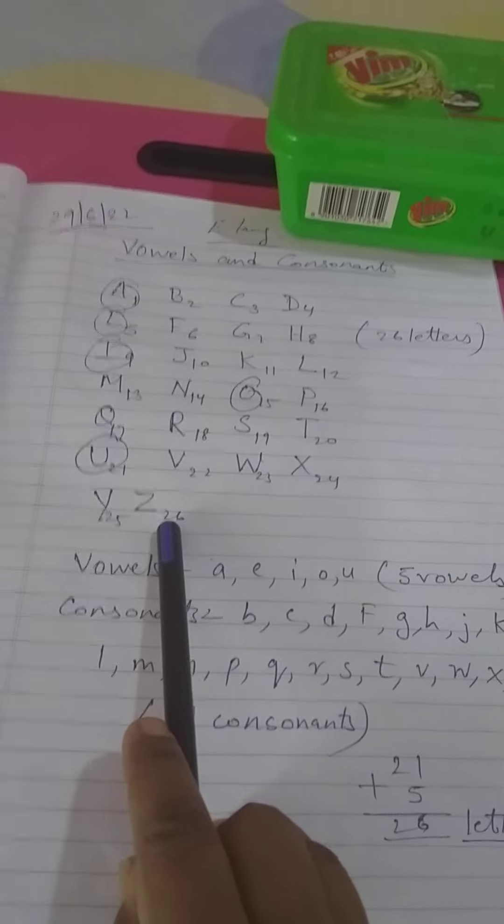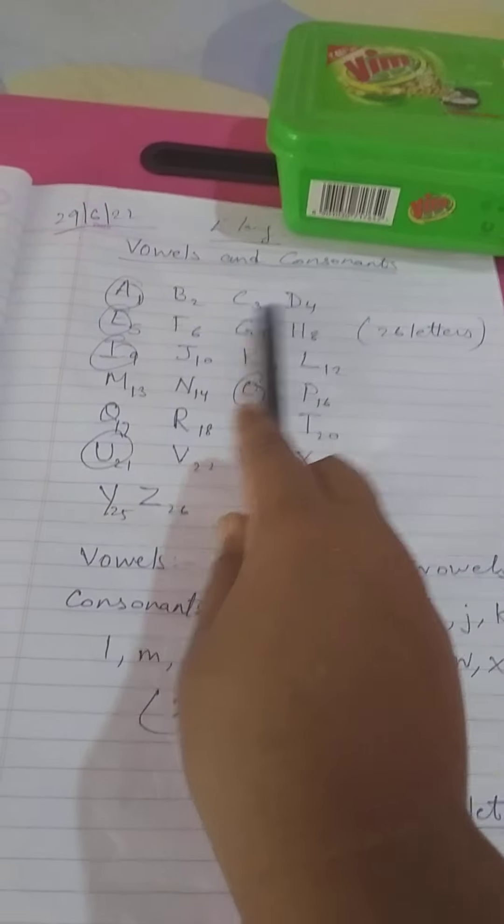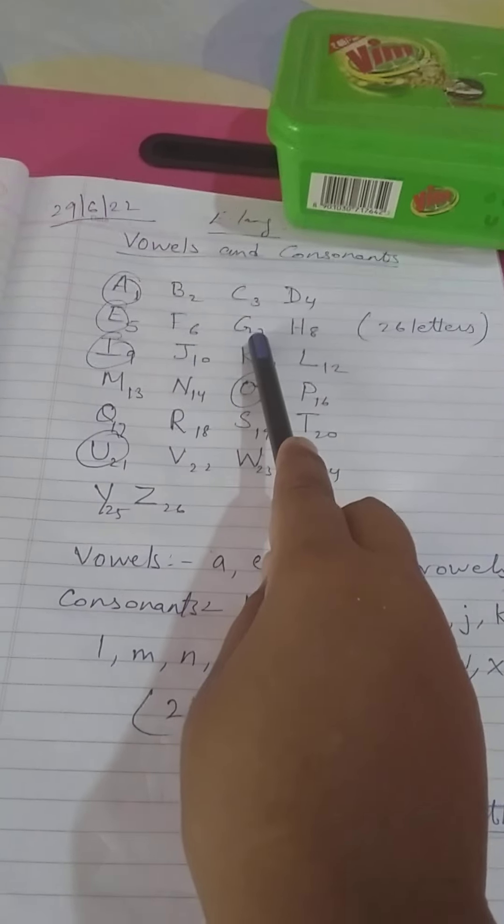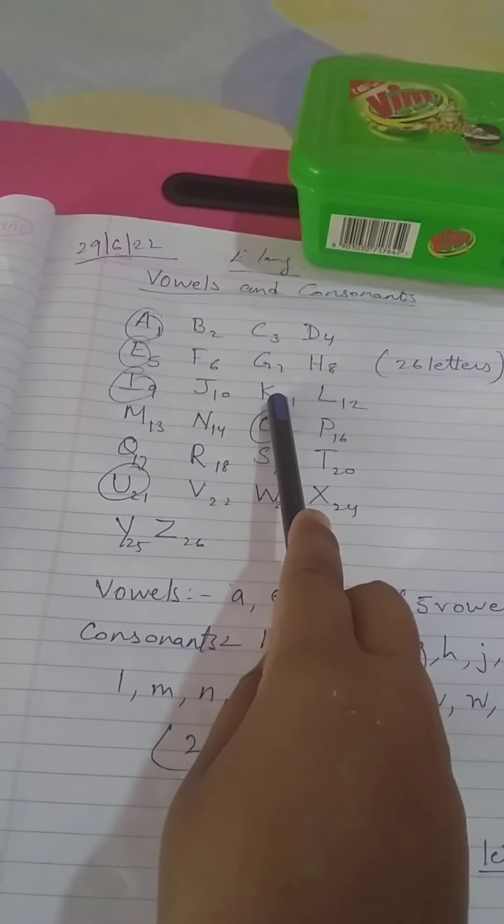There are 26 letters in English alphabet from A to Z: A1, B2, C3, D4, E5, F6, G7, H8, I9, J10, K11.